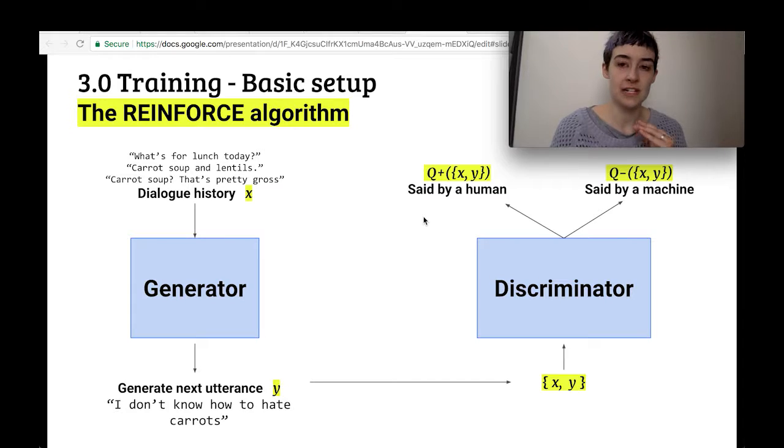Now over time, the generator is trying to get better at imitating human dialogue, and the discriminator is trying to get better at deciding whether something is human or machine. So this is very similar to the image GANs, but it turns out this doesn't work well at all. So the authors go through a number of improvements in training to actually get this to generate reasonable dialogue that sounds human.